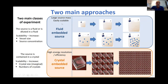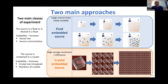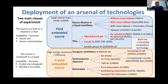There are two main approaches: experiments where the source is embedded in a fluid — larger source masses are easily achievable and the experiment is scalable by increasing vessel size or source concentration, but energy resolution is typically not as good. The other option has the source embedded in crystals — more difficult to achieve high detector mass but easier to get high energy resolution and efficiency; scalability is achieved by multiplying the number of crystals.